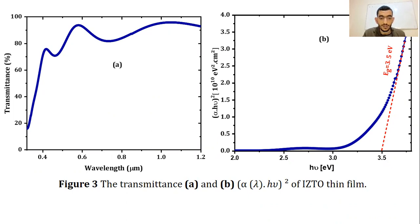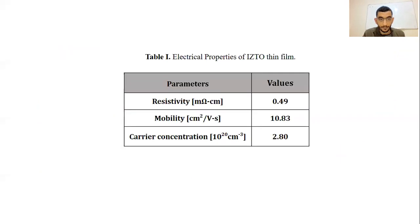The obtained resistivity, mobility and carrier concentrations were 0.49 milli-ohm centimeter, 10.83 centimeter square per volt second and 2.80 times 10 to the 20 per centimeter cubed.